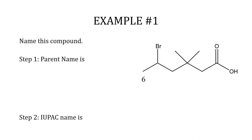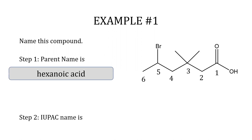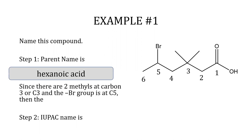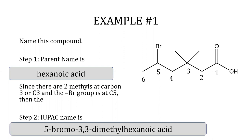Example one has a parent chain of hexanoic acid. There are two methyl groups at carbon three (C3) and a bromine substituent at C5. The IUPAC name is 5-bromo-3,3-dimethylhexanoic acid.